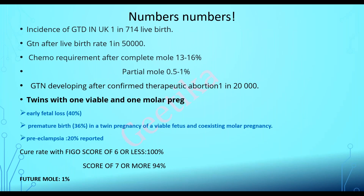Key numbers to remember: Risk of GTD in UK is one in 714. Risk of GTN after live birth is one in 50,000. Requirement of chemotherapy in complete mole is 13 to 16%, in partial mole 0.5 to 1%. GTN developing after therapeutic abortion is one in 20,000. In twins with one viable and one molar pregnancy: early fetal loss in 40%, premature birth in 36%, pre-eclampsia in 20%. Cure rate with FIGO score six or less is 100%, with score seven or more is 94%. Chance of future mole is 1% (one in 100).